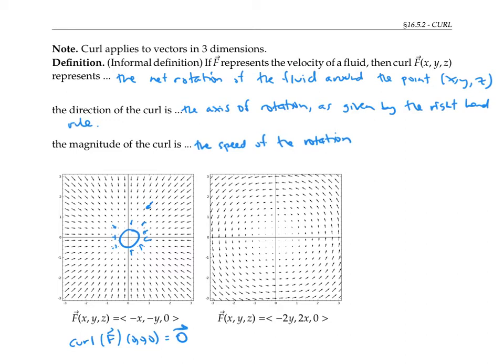In the second example, however, if we put a little ball at the origin in this example, the fluid is pushing it in this direction. So if I do my right hand rule and curl my fingers in the direction of rotation, my thumb will point straight up in the direction of the positive z axis.